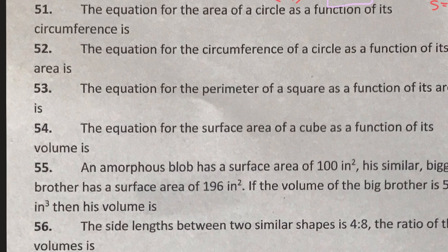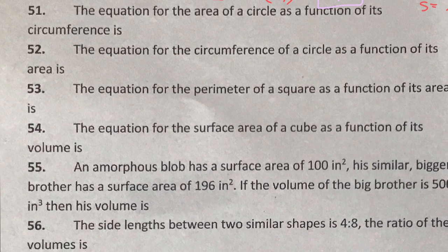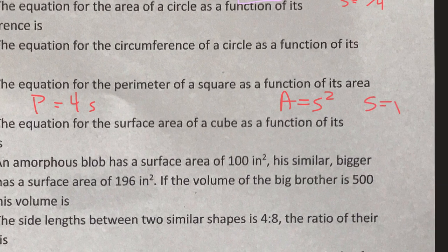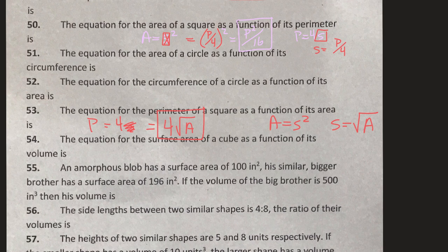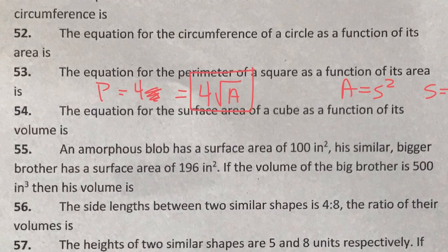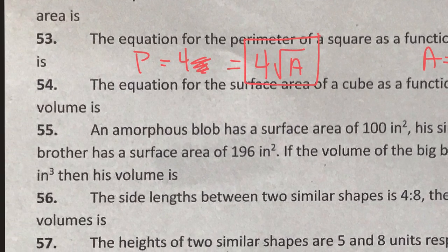The equation for the perimeter of a square as a function of its area. We talked about this a second ago but now we're switching it up. Perimeter is 4s. Area is s squared. So the side length is found by taking the square root of the area. I'm going to replace s with the square root of area. So that's the perimeter as a function of area — up here we had area as a function of perimeter, this is perimeter as a function of area.